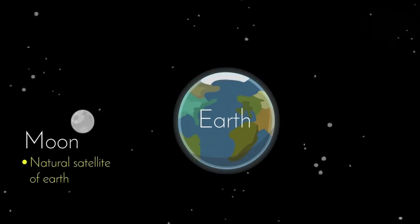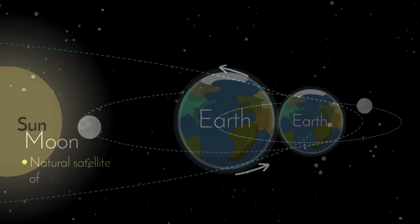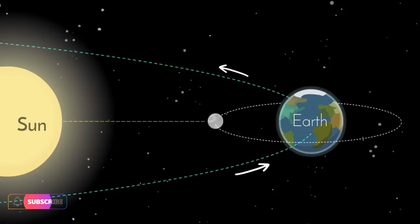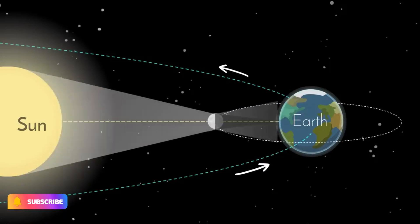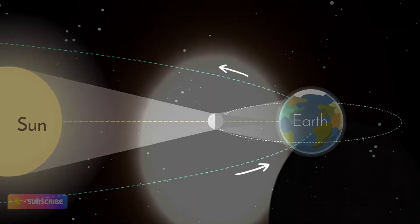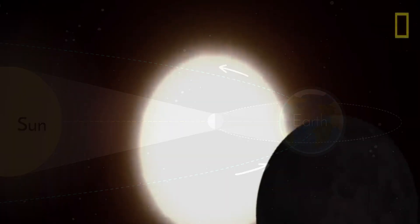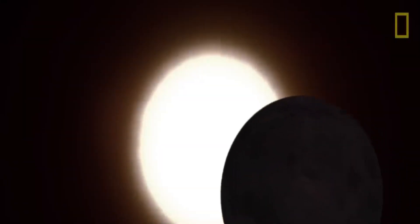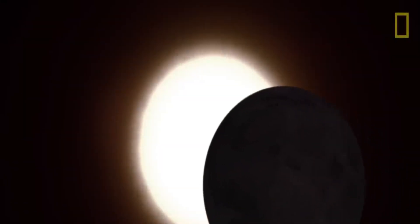What is a solar eclipse? A solar eclipse is an astronomical event that occurs when the moon passes between the sun and the earth, blocking the sun's rays from reaching the earth. The moon's shadow falls on a small area of the earth's surface, which creates a temporary darkness or partial darkness.